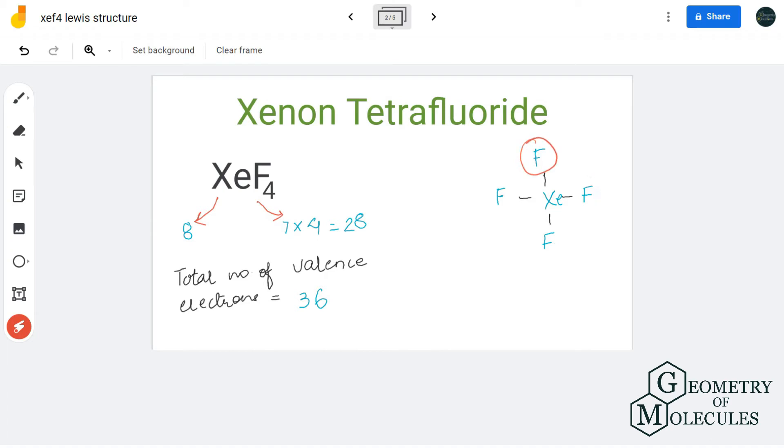Now let's start placing valence electrons around all the atoms. There will be 8 around the xenon atom, and although it is a noble gas, it can accommodate more than 8 electrons in its outer shell.